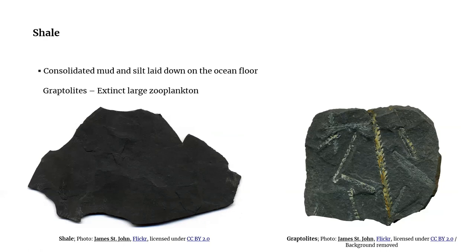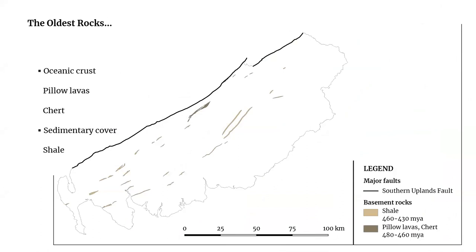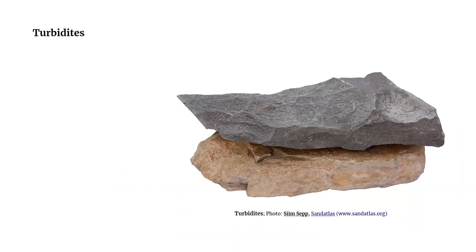As we can see on the map, the succession of rocks that represent the oceanic floor and the sedimentary cover outcrops only on very small areas. This succession is followed by overwhelming volumes of now-consolidated sediments called turbidites.